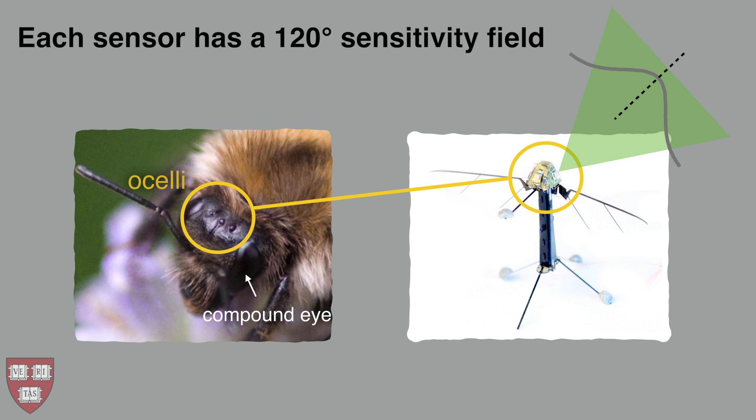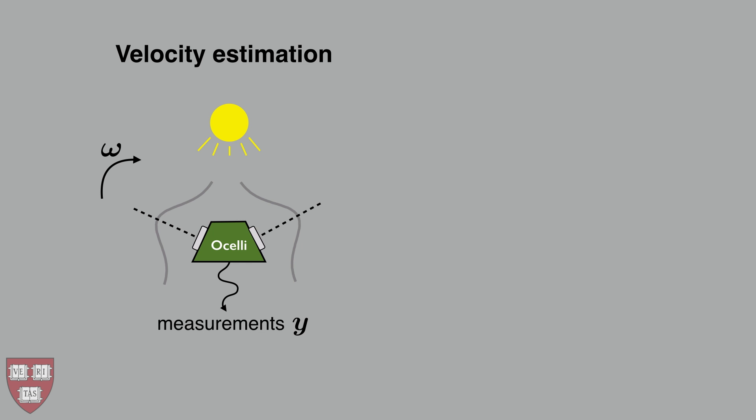Each sensor captures light from a large, diffuse area of the visual field. By comparing changes in sensor readings from different photoreceptors, the ocelli sensor can estimate angular velocity.